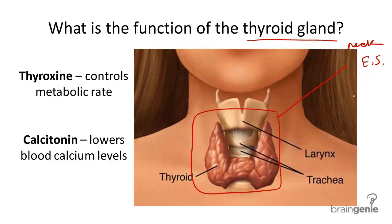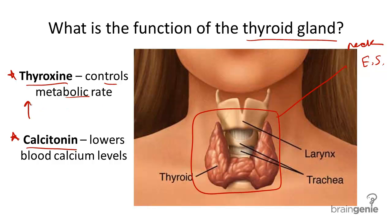It helps the body build new bone. The thyroid gland produces and secretes two major hormones: thyroxine and calcitonin. Thyroxine affects most of the body's cells by controlling its metabolic rate. Its sole purpose is to increase the rate at which cells turn food into energy.